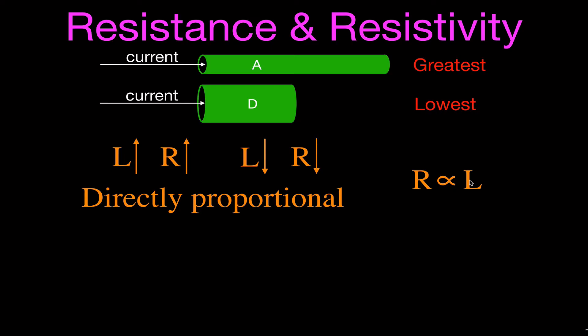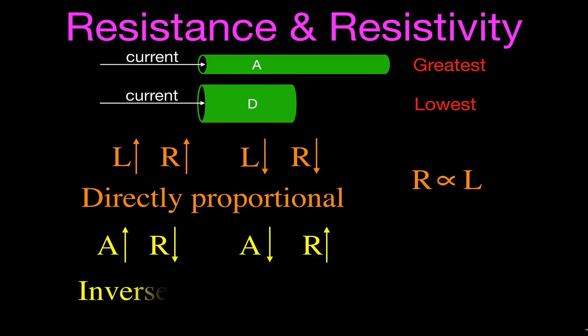What about the cross-sectional area? As the area increases, the resistance is going to decrease — as the wire gets bigger, it's easier for the current to flow through. As the area decreases, the wire gets smaller and smaller, and the resistance is going to increase. Because those go in opposite directions, we say they are inversely proportional. The resistance is inversely proportional to the area, because as we increase the area, the value in the denominator gets bigger and the result — the resistance — gets smaller.